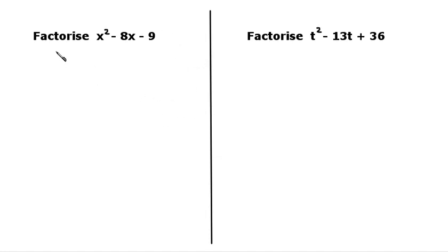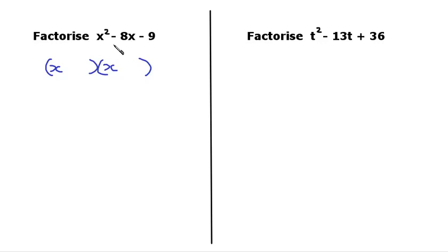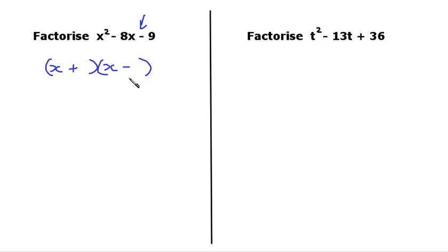Here are two more examples. We're going to factorise x squared minus 8x minus 9. So again we're going to have two brackets, and we've got 1x squared, so we're going to have an x at the front of each bracket. Now we need to look at the signs. This time we've got both negative. You decide which signs go in the brackets by looking at the second sign. If that one is negative, that means we must have one positive and one negative in the brackets, because the only way to get a negative answer when multiplying two numbers is if one is positive and one is negative.